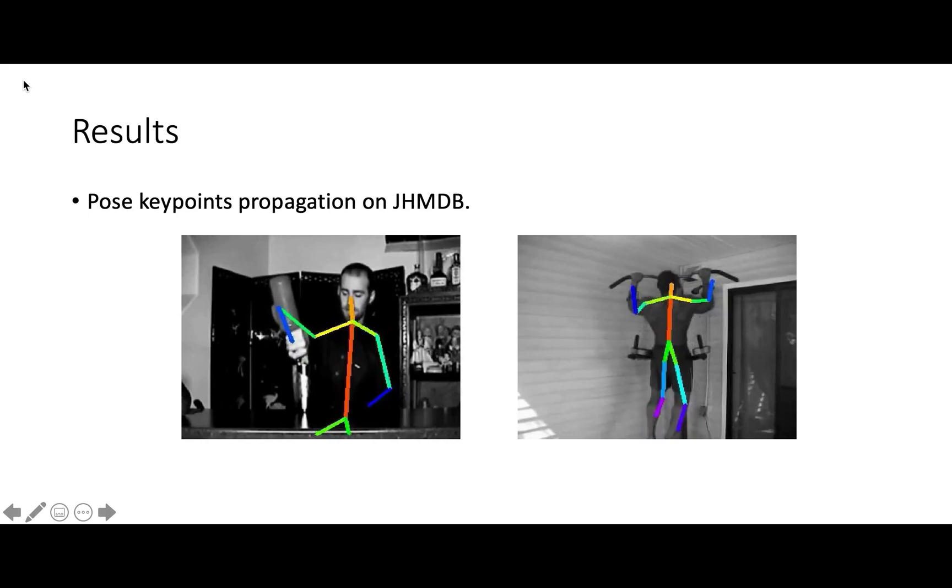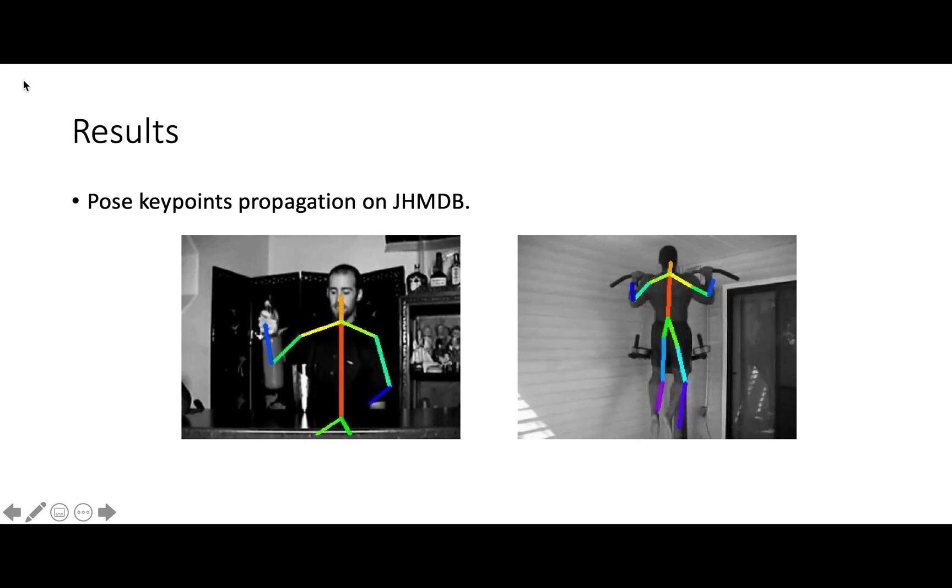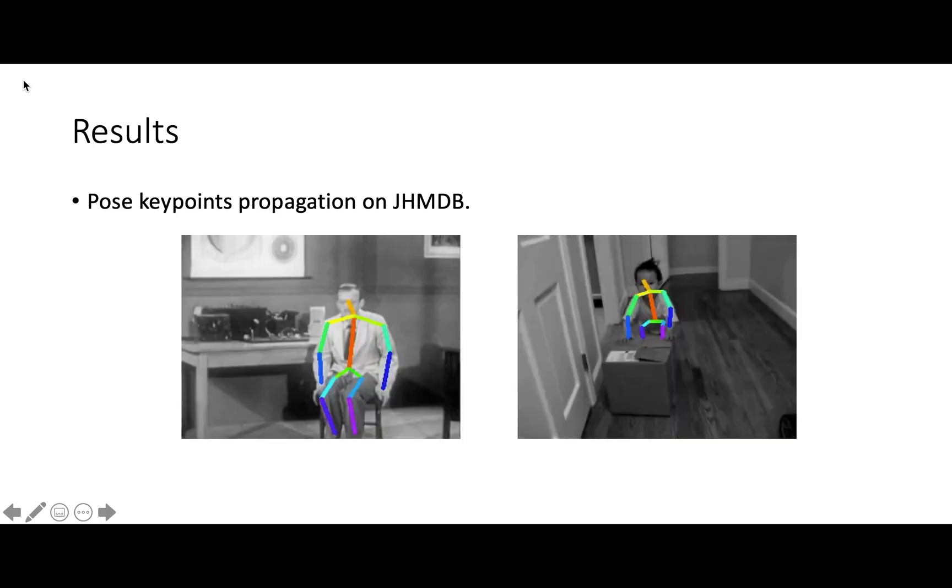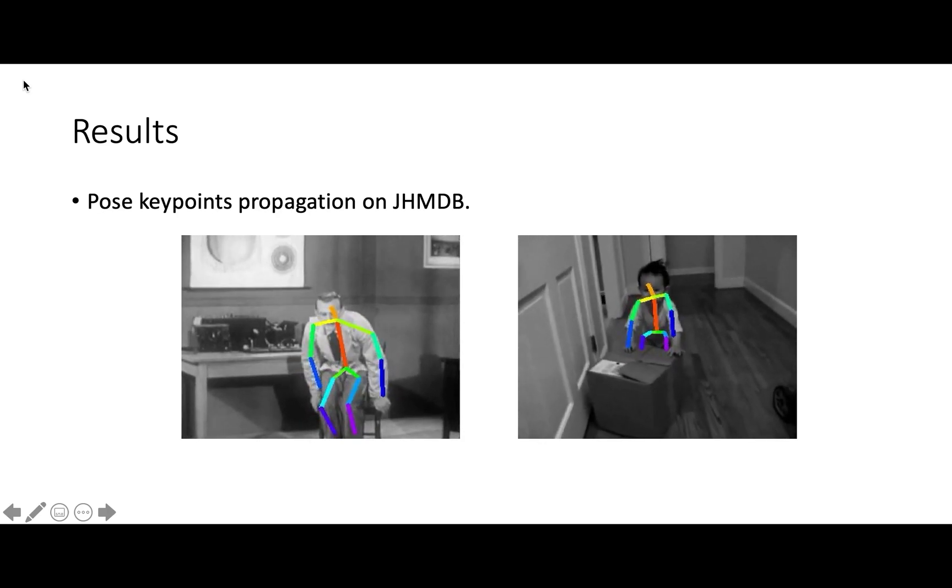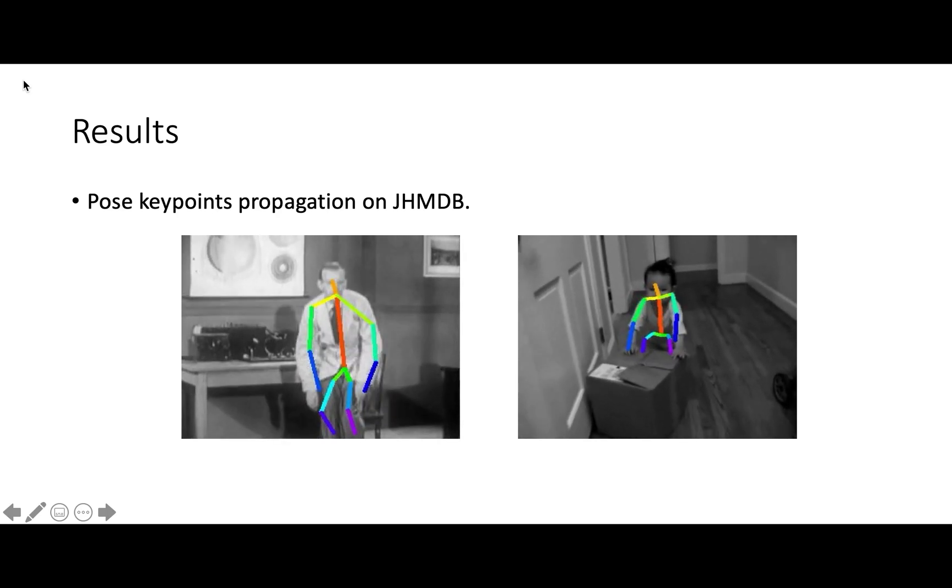Besides segmentation masks, we can also use the learned affinity matrix to propagate human pose keypoints through videos. Given the pose annotations in the first frame, we propagate the keypoints to the rest of the frames.